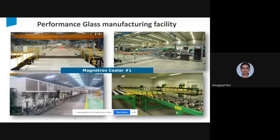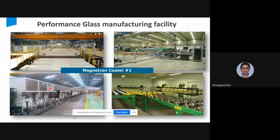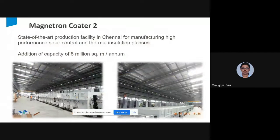The coating setup takes raw glass, puts it in a coater line, and produces different types of coated glasses. There are different series of glasses available in the market. A key parameter is spectral selectivity — the ratio between light transmission and solar factor. The higher the spectral selectivity, the more light is admitted for the same solar factor. Products like PLT offer better selectivity than ET, meaning more light with less heat.